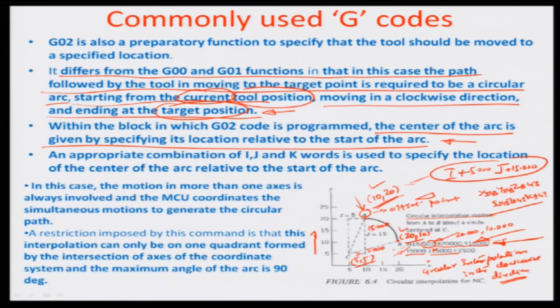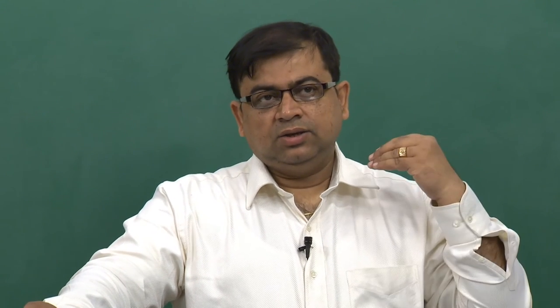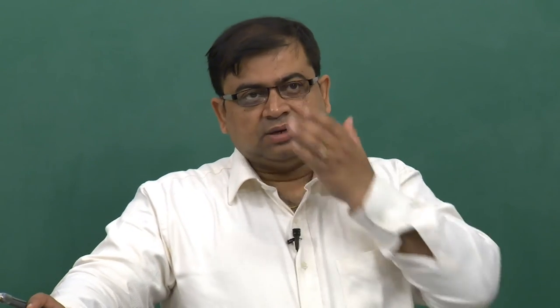That is how you do the definition for the circular interpolation. If the circular interpolation is G03, the same thing would happen in the counter-clockwise manner - instead of going clockwise to point B, the tool would go counter-clockwise and B would be somewhere else. You have to be very careful about the direction. By defining the center position C from an earlier step and programming the offset value and the final position, you execute the arc - that is how circular interpolation is done.